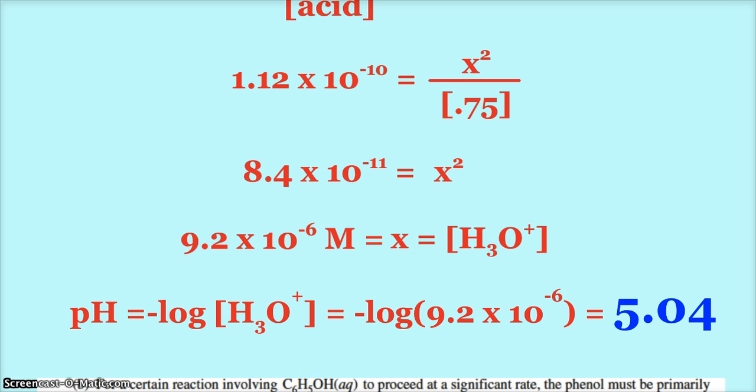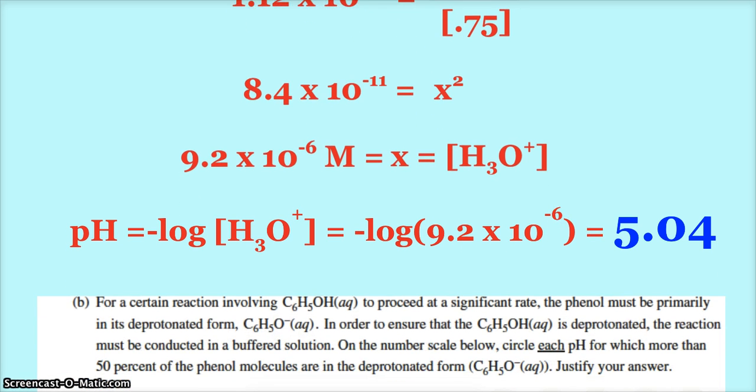Now here's the second part to this question. For a certain reaction involving phenol to proceed at a significant rate, the phenol must be primarily in its deprotonated form. So it needs to be in the conjugate base form, it needs to lose its hydrogen. In order to ensure that the phenol is deprotonated, the reaction must be conducted in a buffered solution. On the number scale below, circle each pH for which more than 50% of the phenol molecules are in the deprotonated form. Justify your answer.